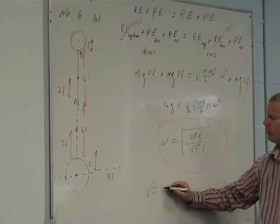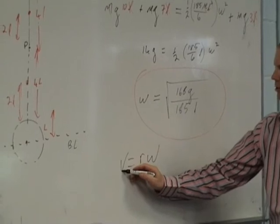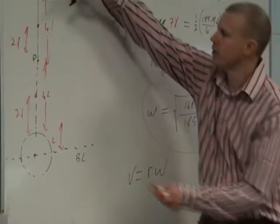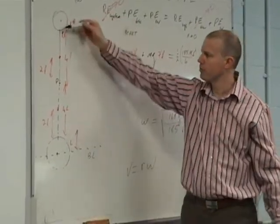But a little part here is going to move a lot more slowly than a part out here which is going to move a lot more quickly. How do I find out how quickly a little point moves? V equals what? V equals R omega.